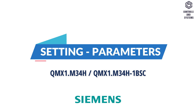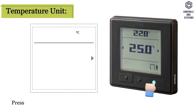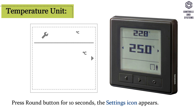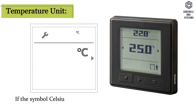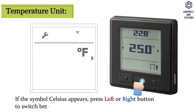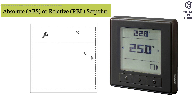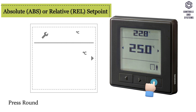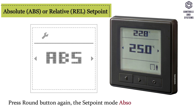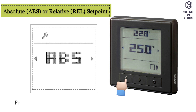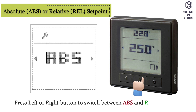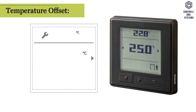Setting parameters — Temperature unit: press the round button for 10 seconds, the settings icon appears. If the symbol Celsius appears, press the left button or right button to switch between Celsius and Fahrenheit. Absolute or relative set point: press the round button again, the set point mode absolute appears; press left button or right button to switch between absolute and relative.